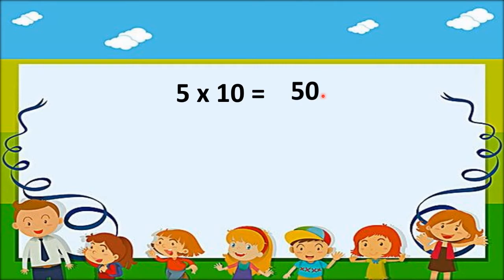There is also another method to do this. As you all know, we always start multiplication from the units place. So here also we do the same. So 5 multiplied by 0: 5 zeros are 0, and 5 ones are 5. So the answer is 50.